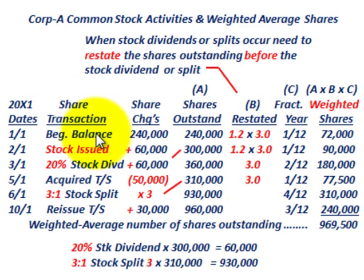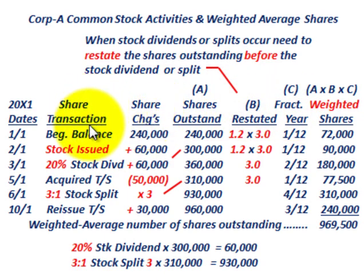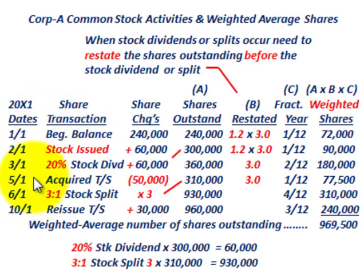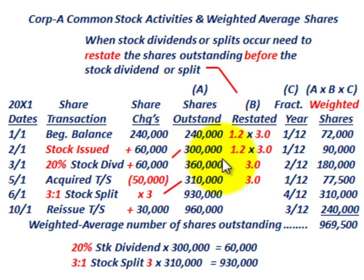We'll set up this table and our ultimate goal is to determine the weighted number of shares outstanding based on stock activities. We have share transactions at specific dates, and based on these dates we'll be able to determine the fraction of the year that they're outstanding. The key is that we're going to have to restate our shares based on stock dividends and stock splits — this is the key to the whole thing.